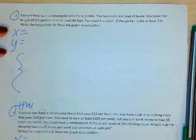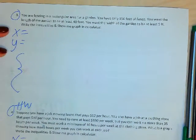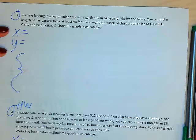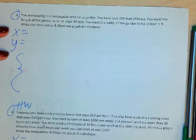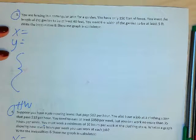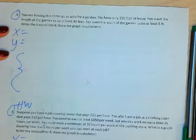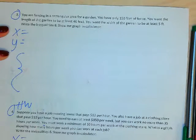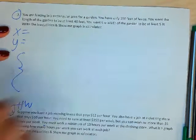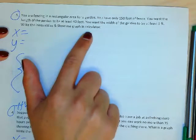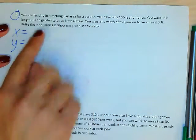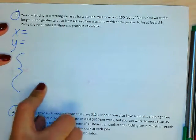Okay guys, so number three from the homework. It says you're fencing a rectangular area for a garden. You have only 150 feet of fence. You want the length of the garden to be at least 40 feet. You want the width of the garden to be at least 5 feet. Write the inequalities and show me the graph in calculator. Okay, so obviously we're not going to show the graph in the calculator. For this homework, it was just the inequality.